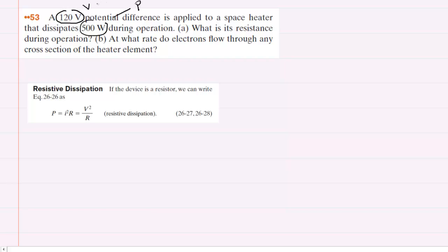So we need an equation that relates V, P, and the resistance R. We look at the resistive dissipation equations and we can see that power is equal to potential difference squared divided by resistance.